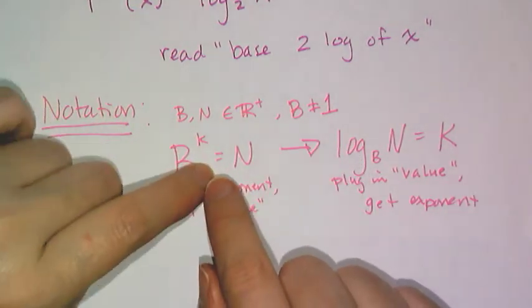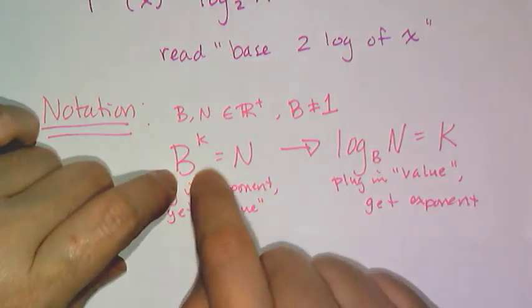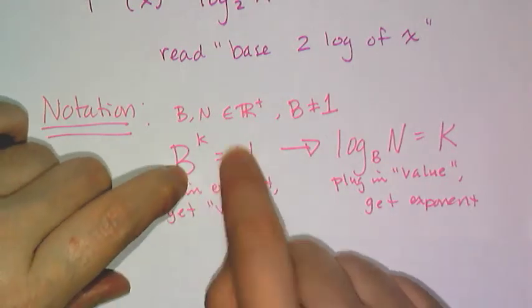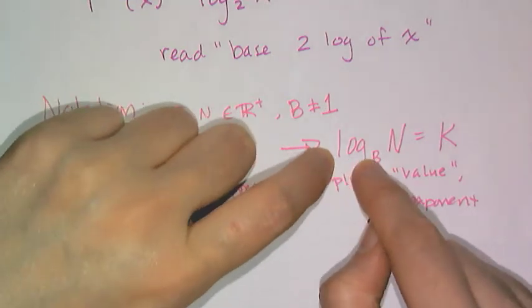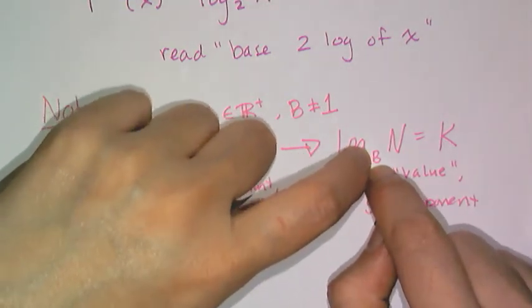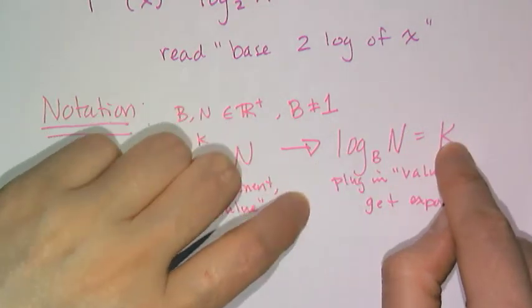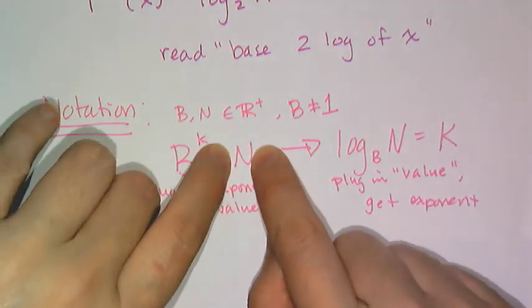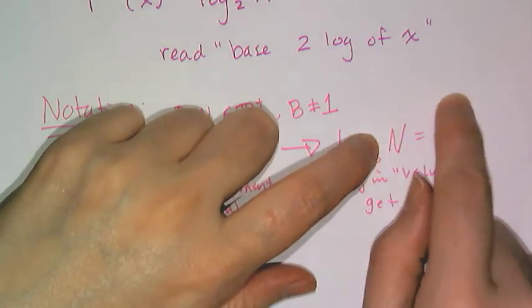Here's the connection between exponents and logarithms. If I have some base raised to the k power, I get some number. So I plug in my exponent and I get some value. Now for the logarithm, you write the word log, you put a subscript B for the base telling everyone what your base of exponent was, and then you have the N and it equals k. So what the logarithm does is you plug in this value and it spits out the exponent.